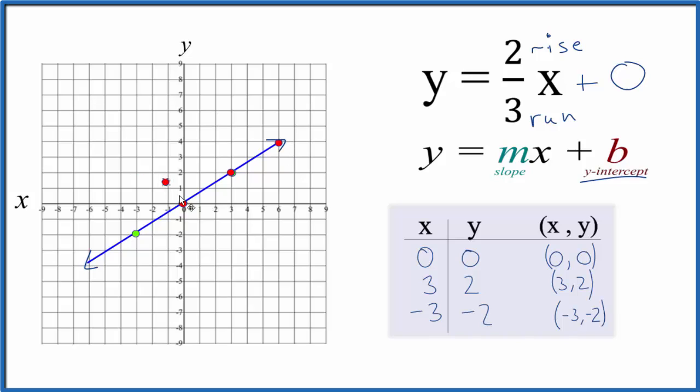Likewise, we could go in the opposite direction. We could go down 1, 2 and go over 1, 2, 3 in the opposite direction. And these points are all on our line. So we graphed the first part with our table of values correctly.